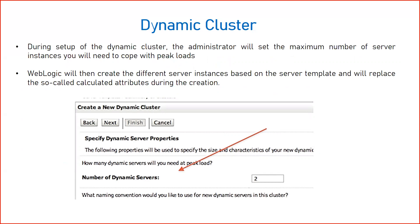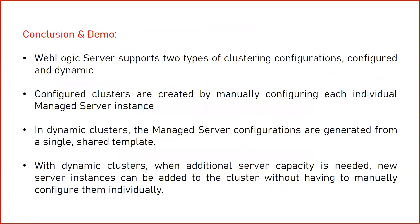During setup of a dynamic cluster, administrators set the maximum number of server instances needed to cope with peak load. In the configuration screenshot, you provide the number of dynamic servers — I've given two, so once the cluster is created it will automatically create two managed servers. WebLogic creates server instances based on server templates, replacing calculated attributes during creation. It will also create a server template at the same time.